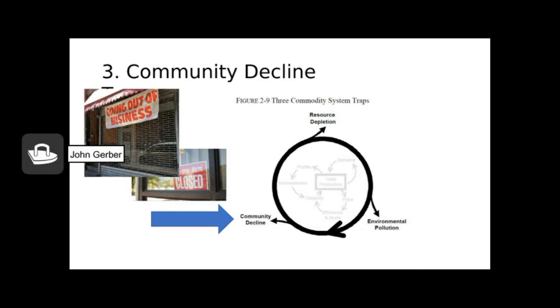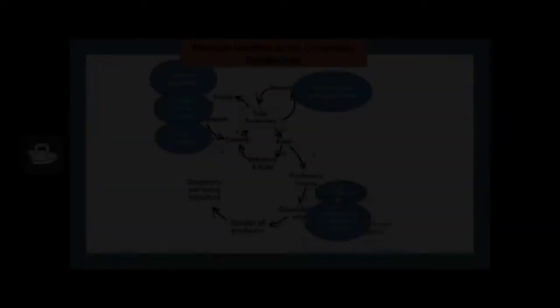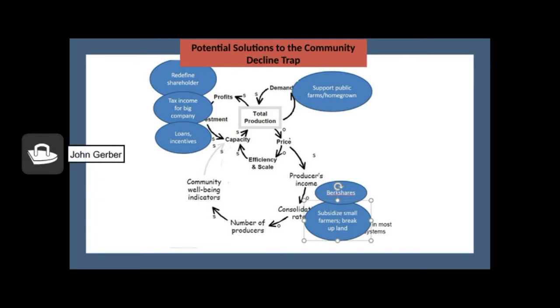So let's look now at community decline and see what my students come up with, suggesting ways to address this fundamental problem. The solution to community decline is more producers, more people on the landscape, building vibrant communities. By reducing the opportunities to consolidate and create bigger farms and bigger companies, bigger fishing boats, we can increase community well-being.